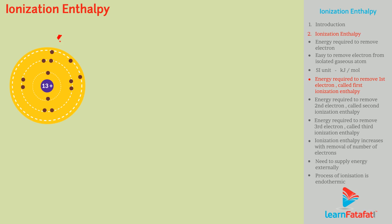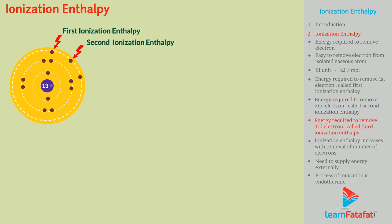The energy required to remove the first electron from the free atom is called the first ionization enthalpy. Similarly, the energy needed to remove the second electron is the second ionization enthalpy. Likewise, to remove the third electron, there is the third ionization enthalpy.